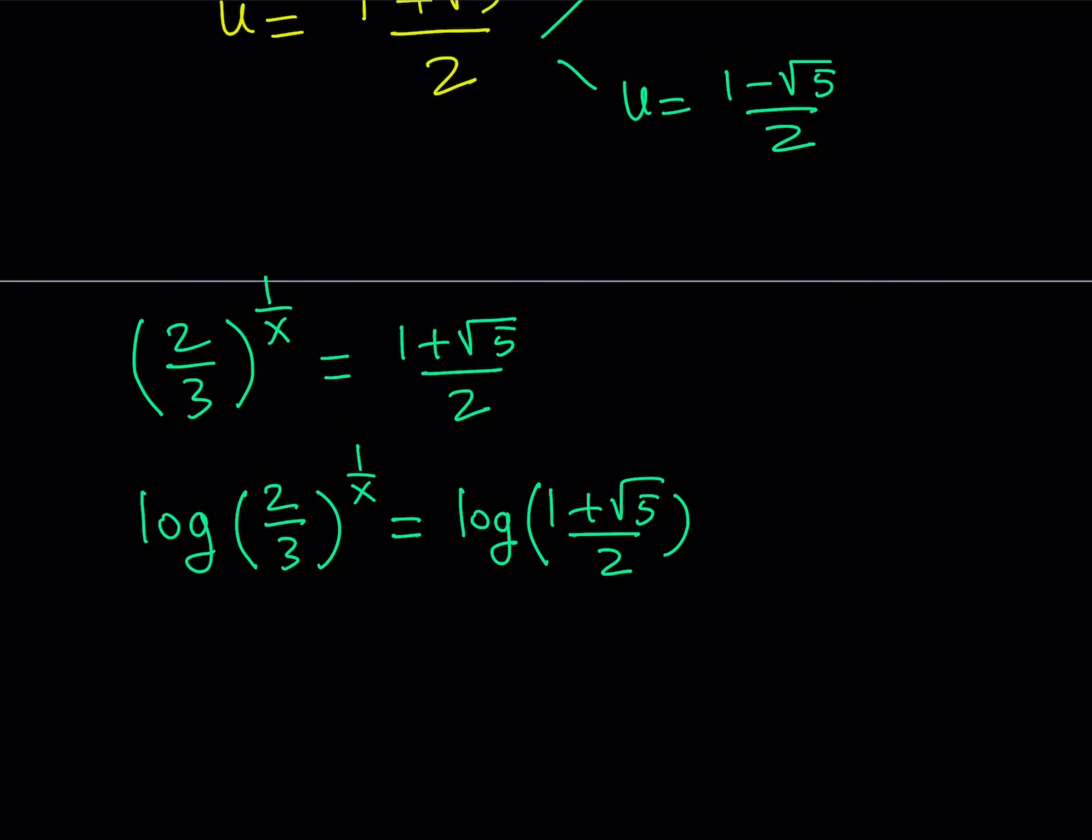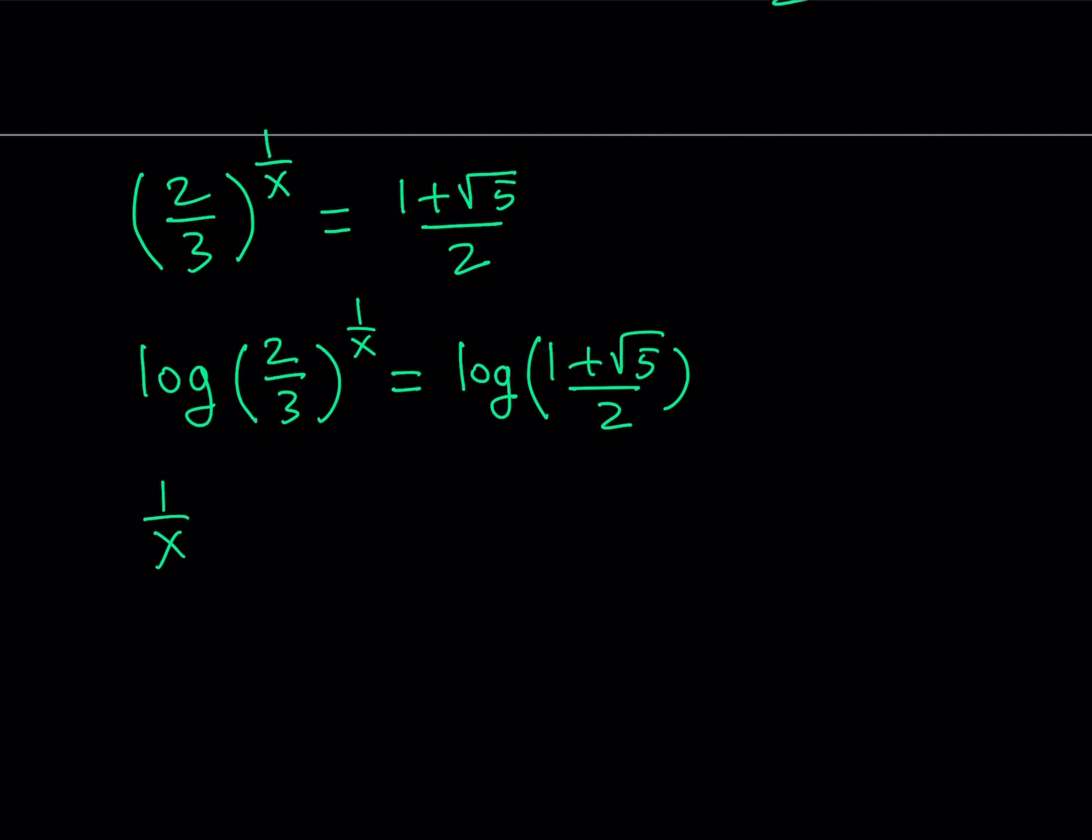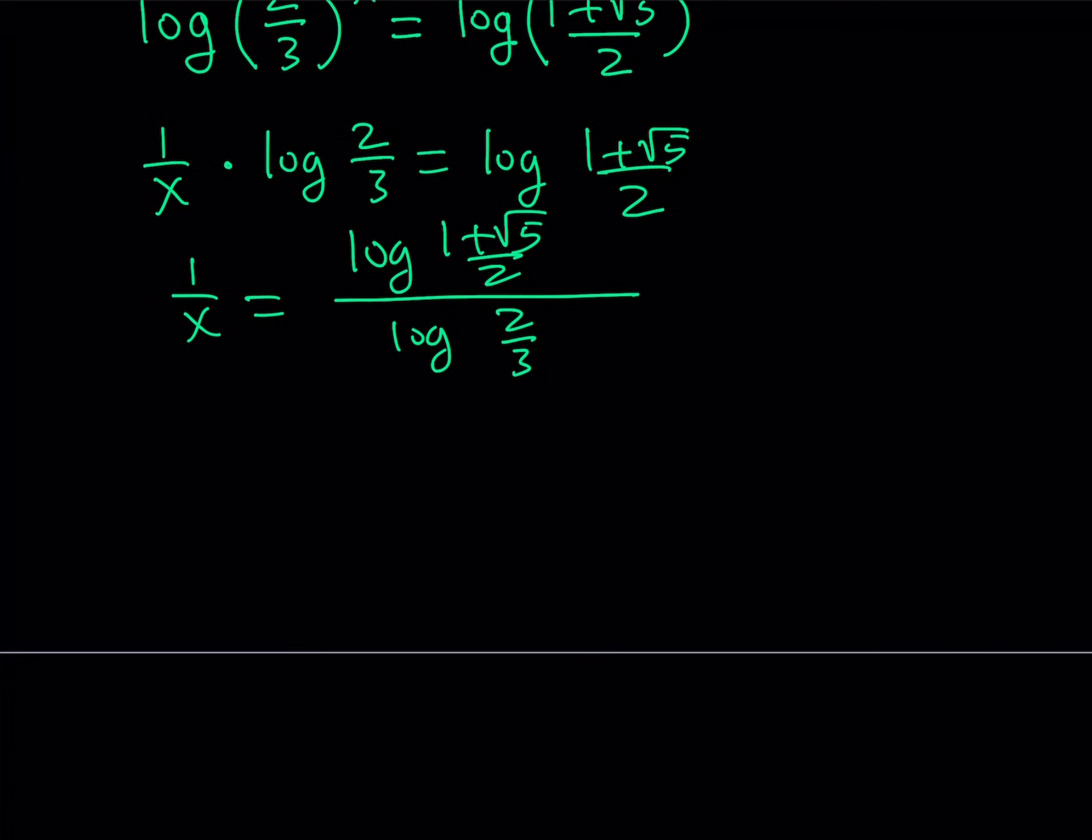So, now once you log both sides, you can basically move 1 over x. 1 over x is going to be here times log 2/3 is equal to log 1 plus root 5 over 2. And, of course, in this case, you could use ln as well for base e. But I just wanted to use base 10. And, again, I keep saying it so that it's not misunderstood. By writing log, I mean log base 10. So, let's go ahead and divide both sides by this log thing. So, it's going to give us log 1 plus root 5 over 2 divided by log 2/3. Of course, we're trying to solve for x here. So, let's go ahead and flip both sides. In other words, let's turn everything upside down.